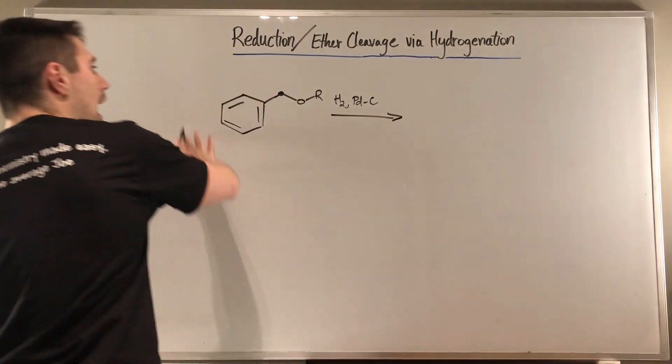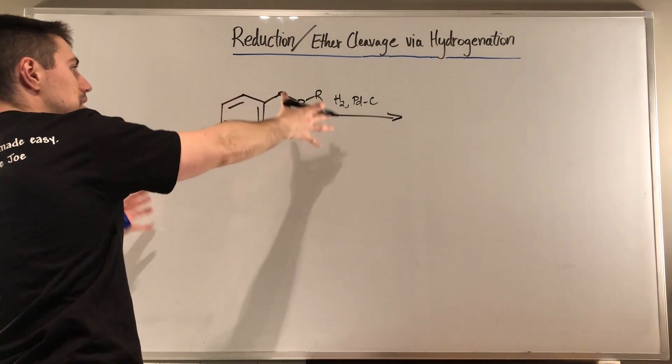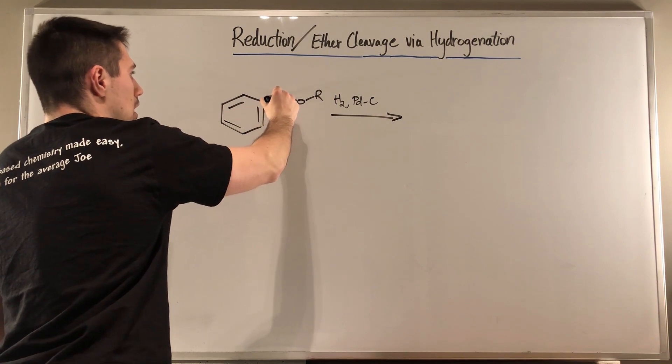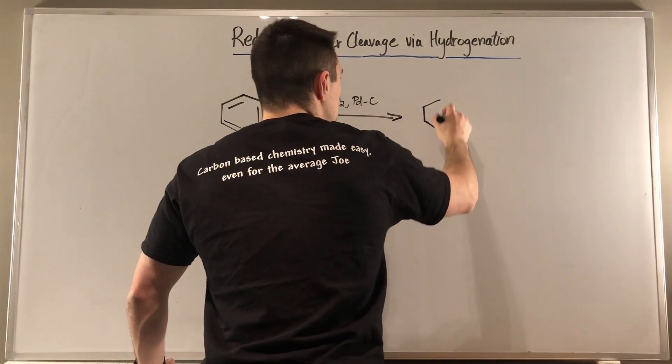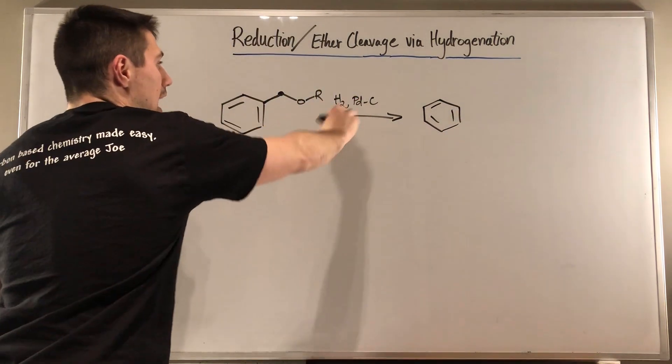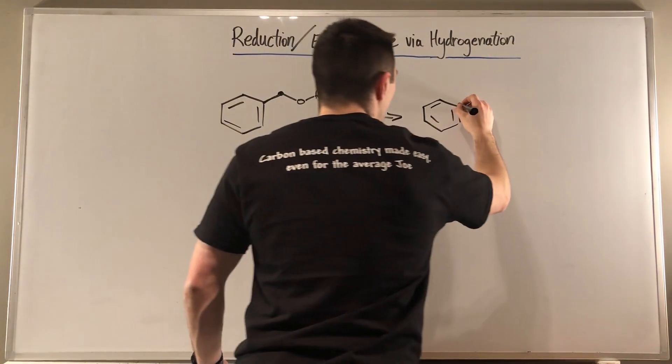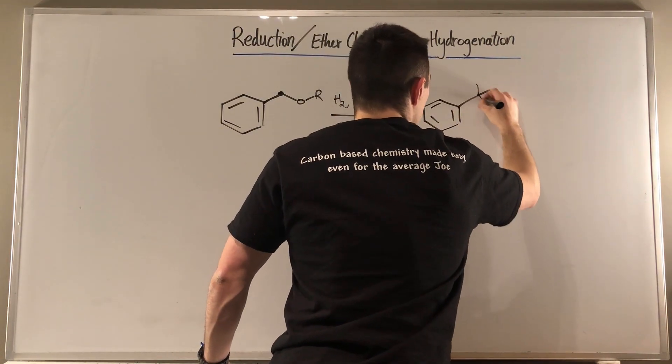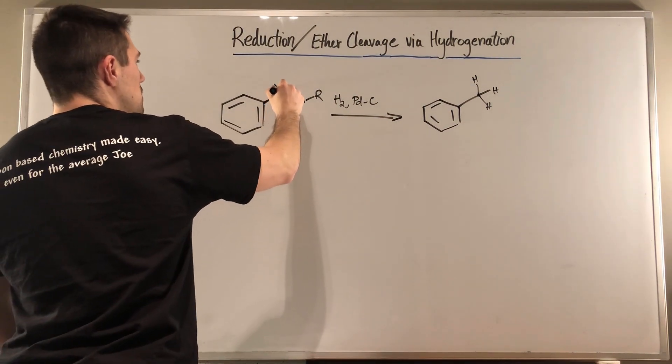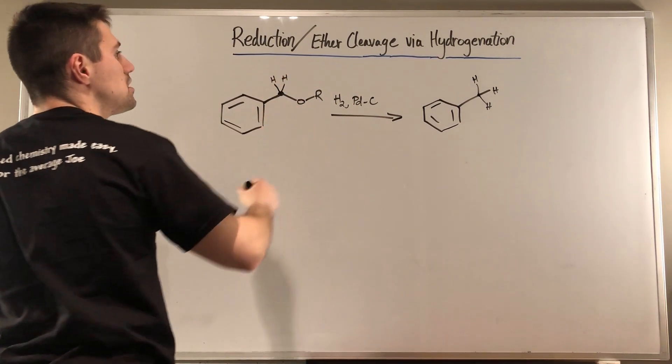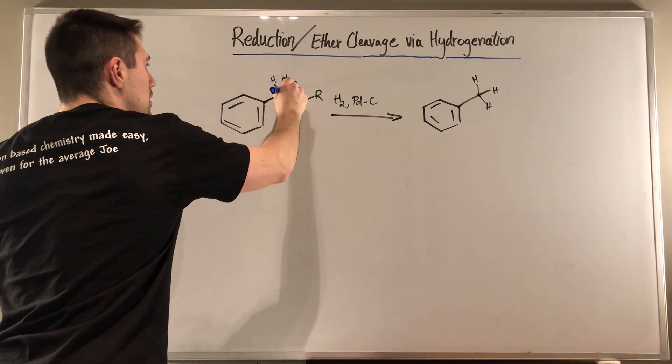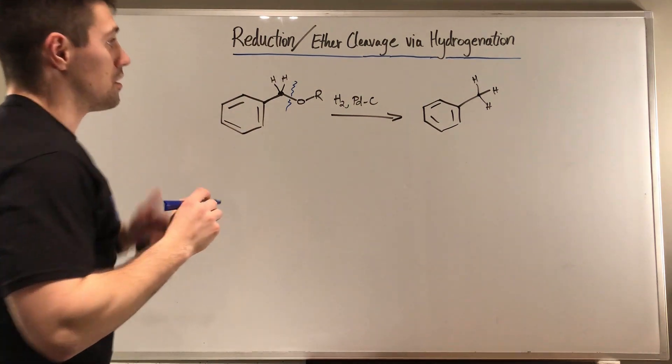So if you have a benzene ring and you have an ether coming off of it, you obviously need to have your benzene carbon right there. By introducing palladium adsorbed onto carbon and hydrogen, the hydrogenation just cleaves the ether and forces extra hydrogens onto that carbon. So you can see we introduced a new hydrogen and we completely just cleaved off the ether section right here.